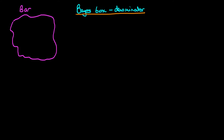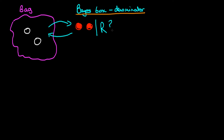We imagine that there is some bag which contains two balls whose colours we don't know. We can reach into that bag and randomly sample one of these balls. Suppose we do that and pull out a first ball that happens to be red. We then put the red ball back into the bag and randomly sample another ball, and suppose we pull out another red ball. The question is: what is the number of red balls in the bag, which I'm denoting here by R.